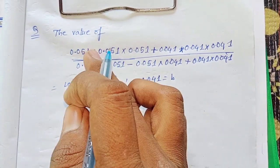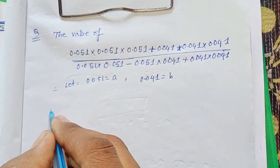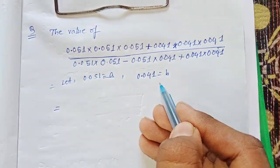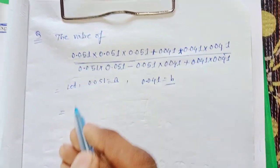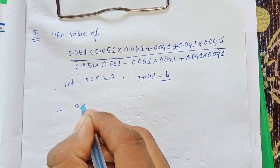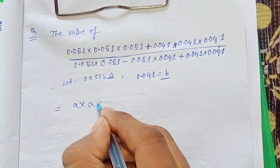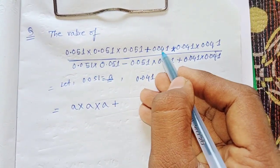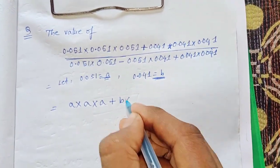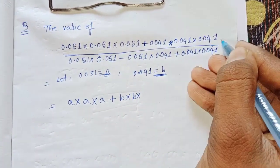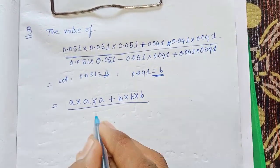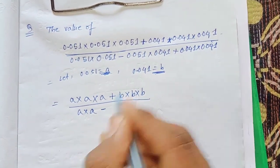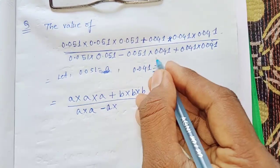Now put the values a and b in place of 0.051 and 0.041. In place of 0.051 we put a, and in place of 0.041 we put b. So the numerator becomes a × a × a, and b × b × b, divided by a × a minus a × b plus b × b.